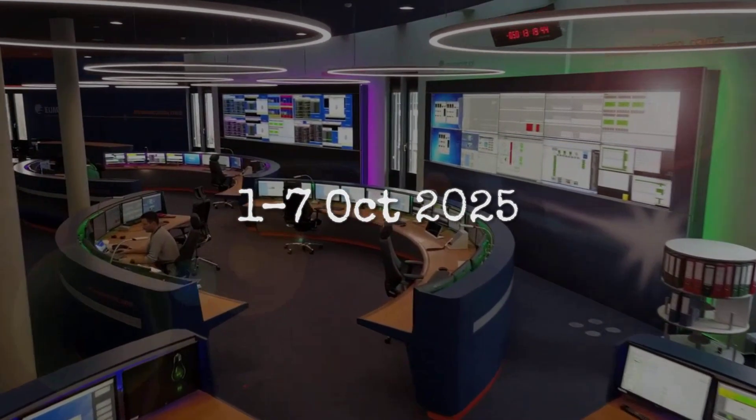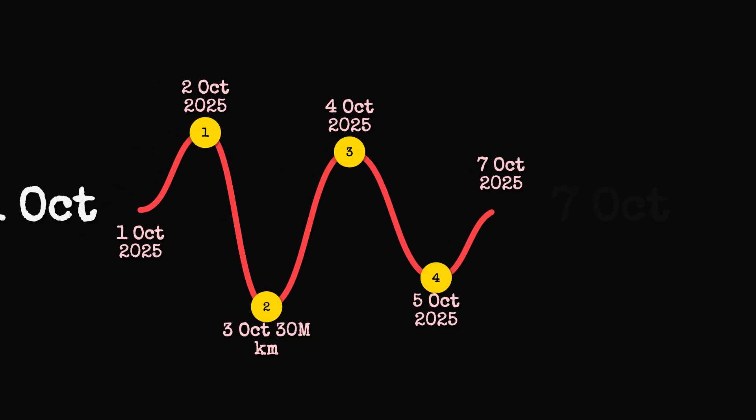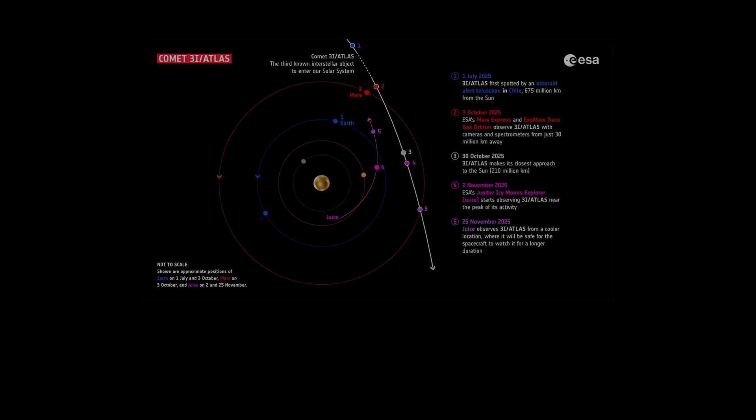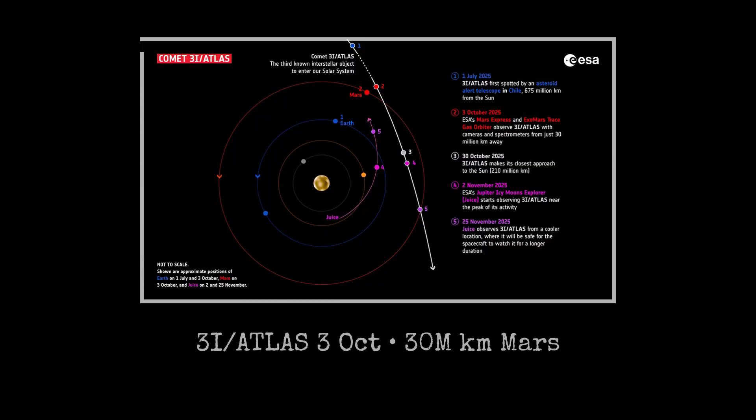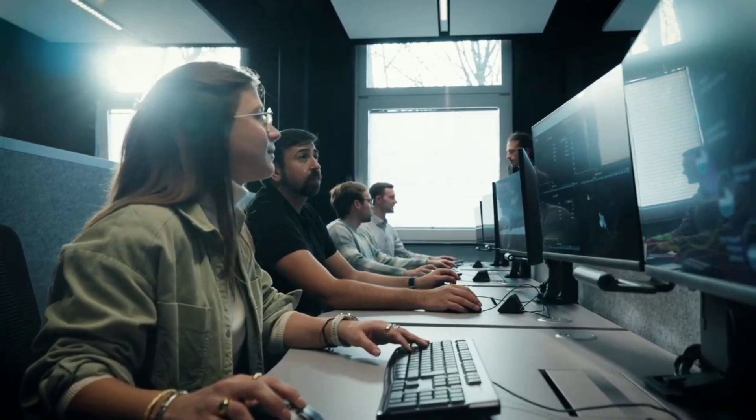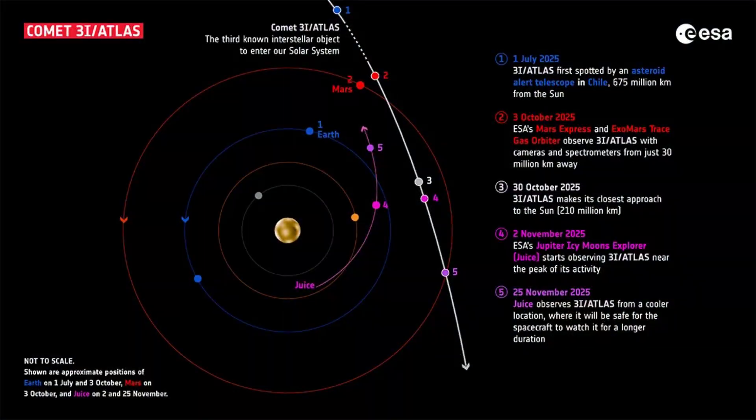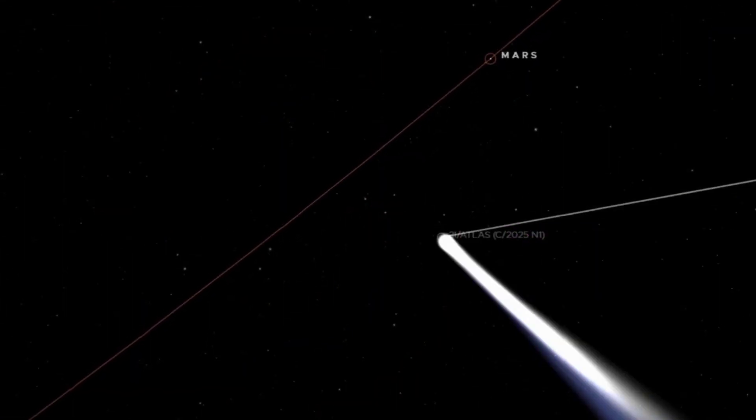Between October 1st and 7th, 2025, Mars orbiter teams found themselves with a rare vantage point. The geometry was almost perfect. As Comet 3I-Atlas swept through the inner solar system, its path brought it to within 30 million kilometers of Mars on October 3rd. For planetary scientists, this was a fleeting corridor of opportunity: just a handful of days when Mars and the comet aligned close enough for detailed observation, yet far enough from the Sun's glare to avoid overwhelming the sensors.